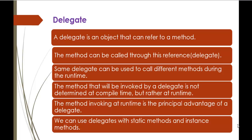In the previous session, we learnt how to create a delegate and also how to invoke methods using the delegate reference. A delegate is an object that can refer to a method. The method can be called through the delegate reference. The same delegate can be used to call different methods during runtime. The method that will be invoked by a delegate is not determined at compile time but rather at runtime. The method invoking at runtime is the principal and key advantage of the delegate.